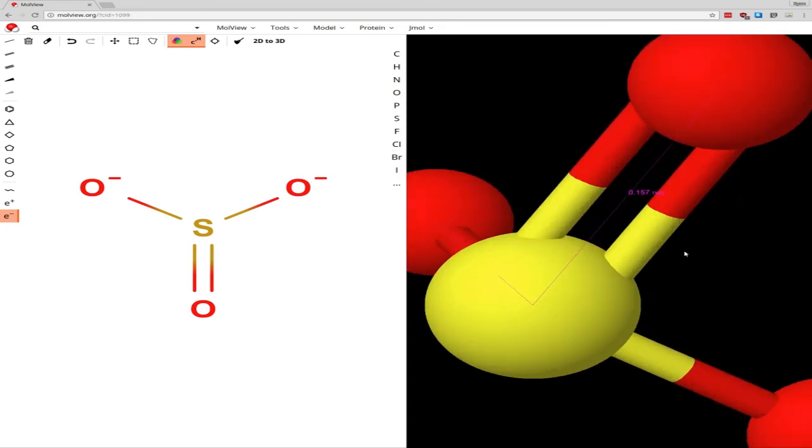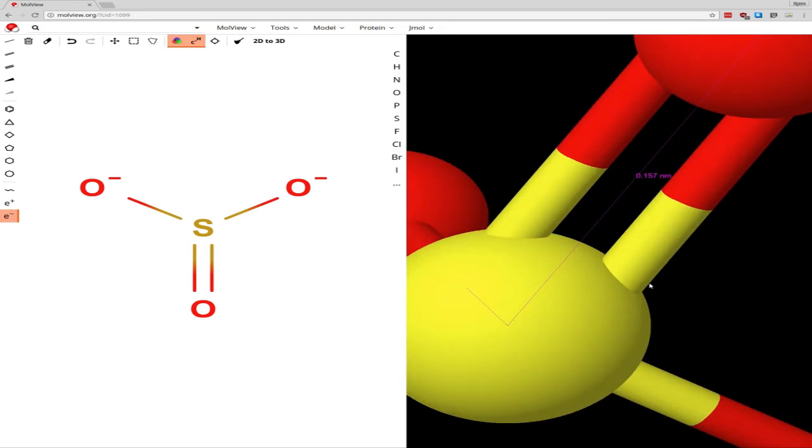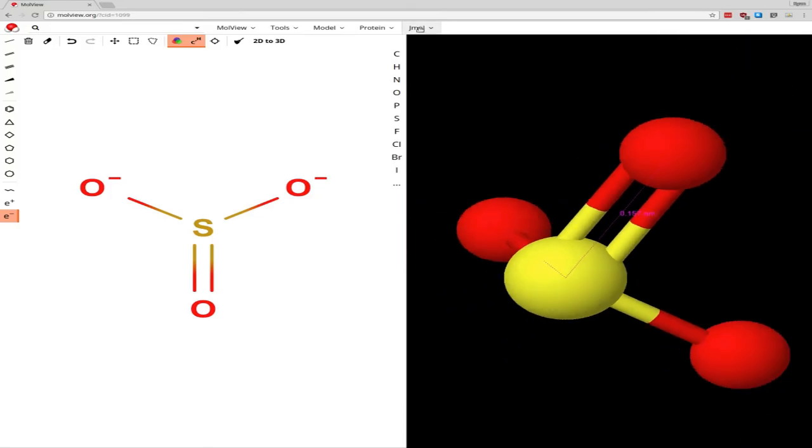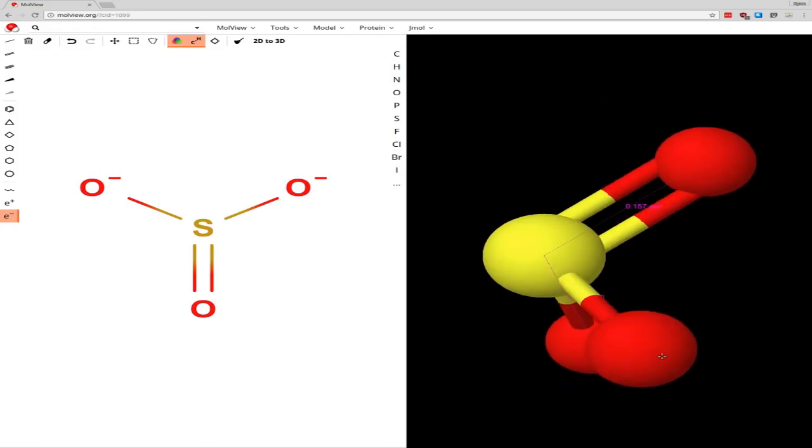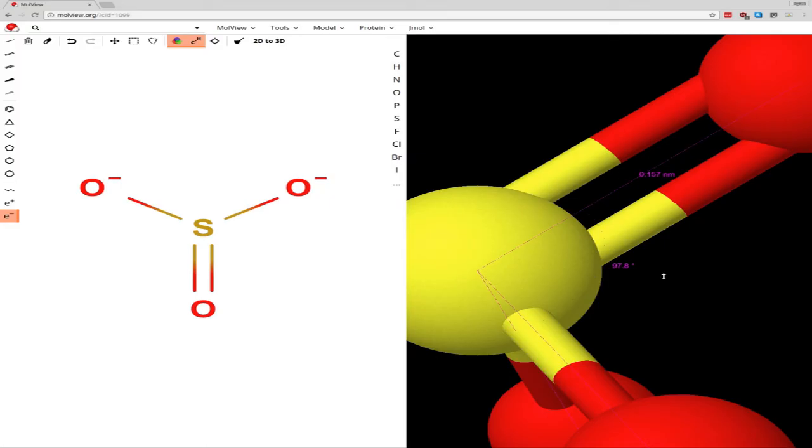Yep, it's just a little bit shorter, 0.157 nanometers. You can also calculate angles, so then you just have to select the three atoms that you're interested in. Angle of 97.8 degrees here.